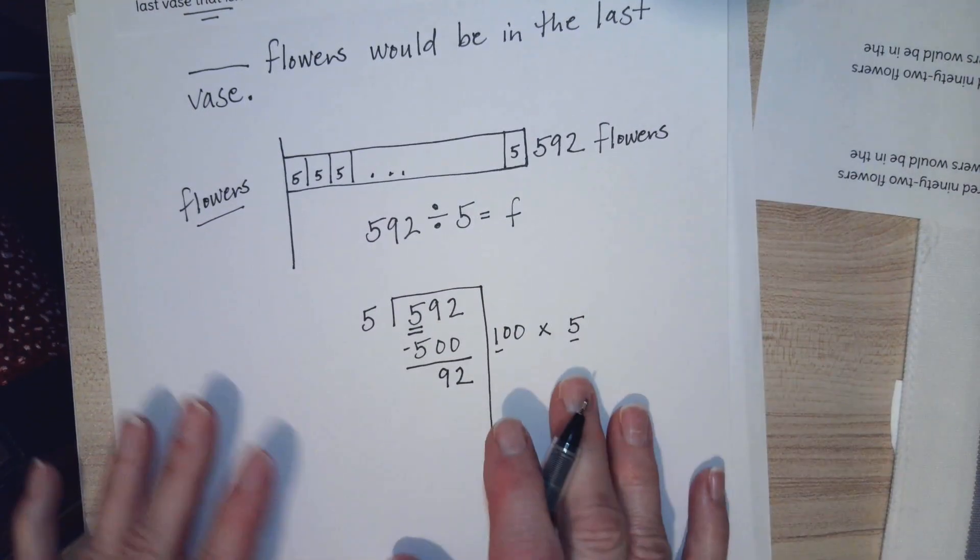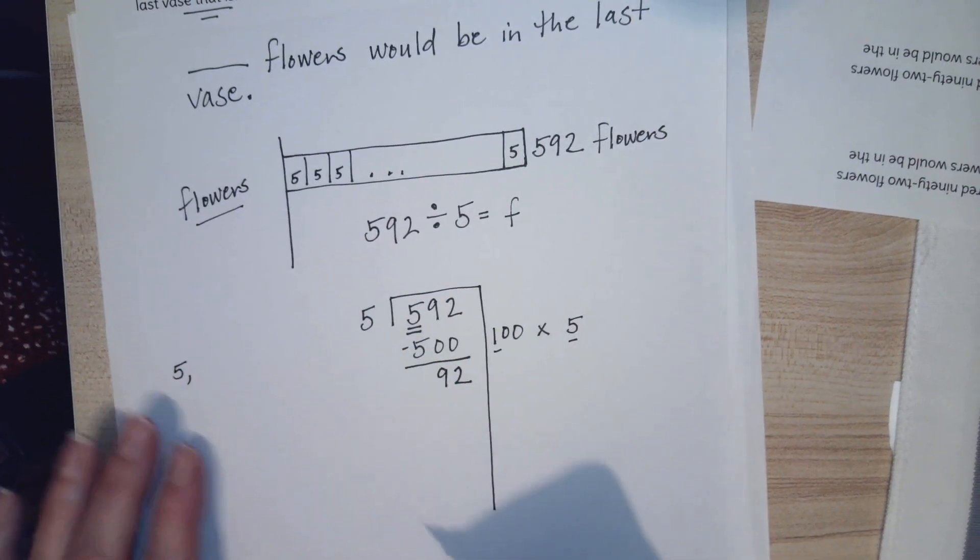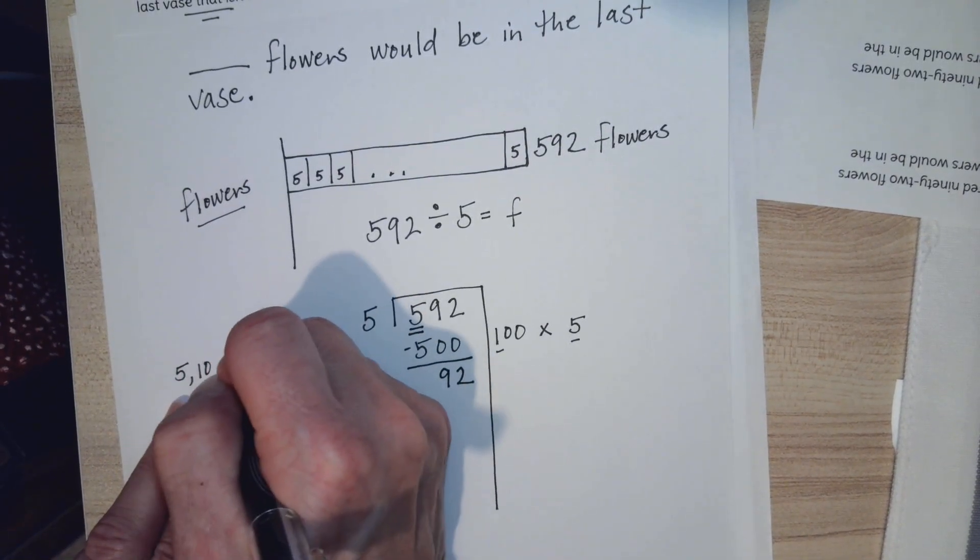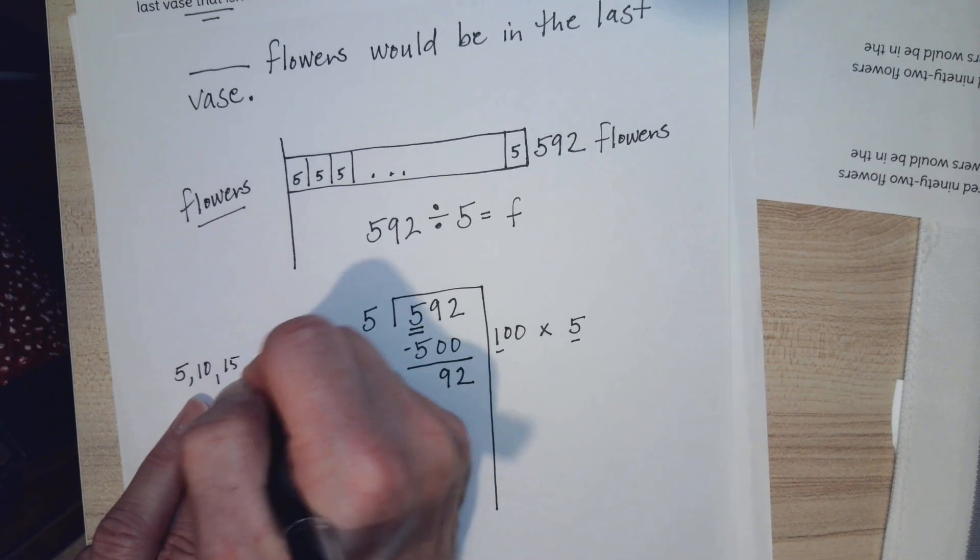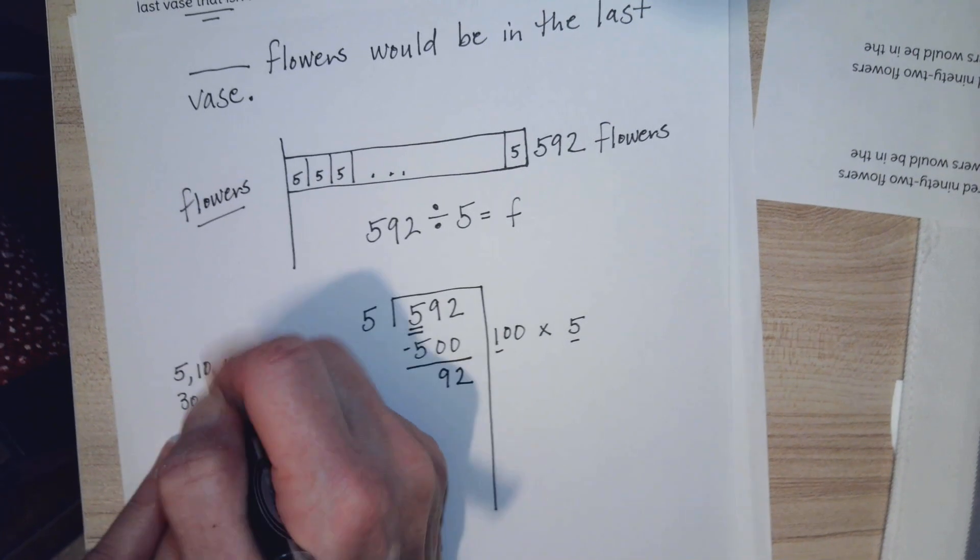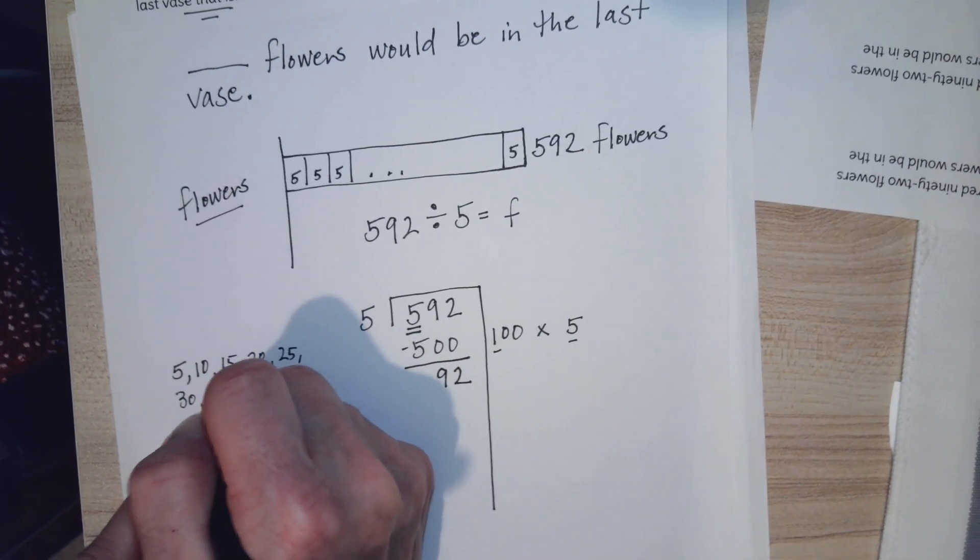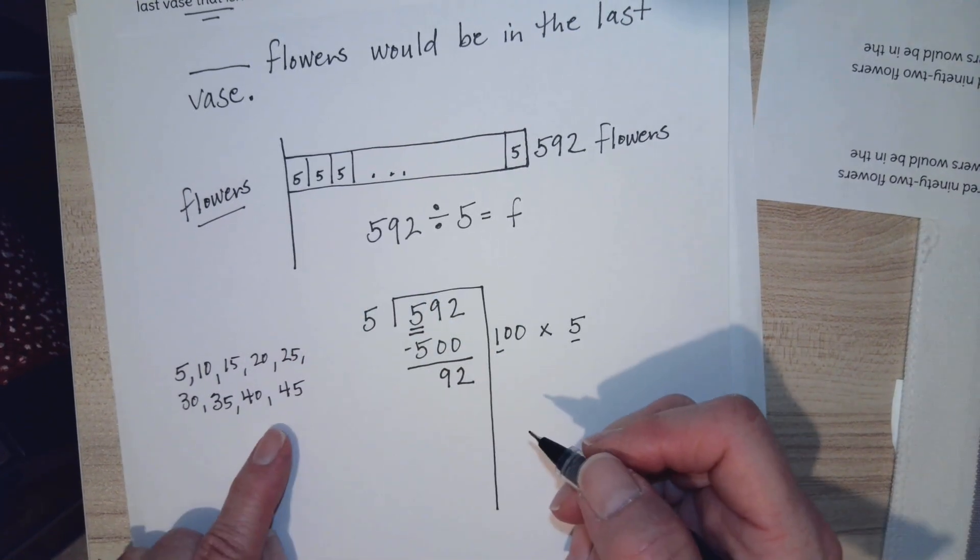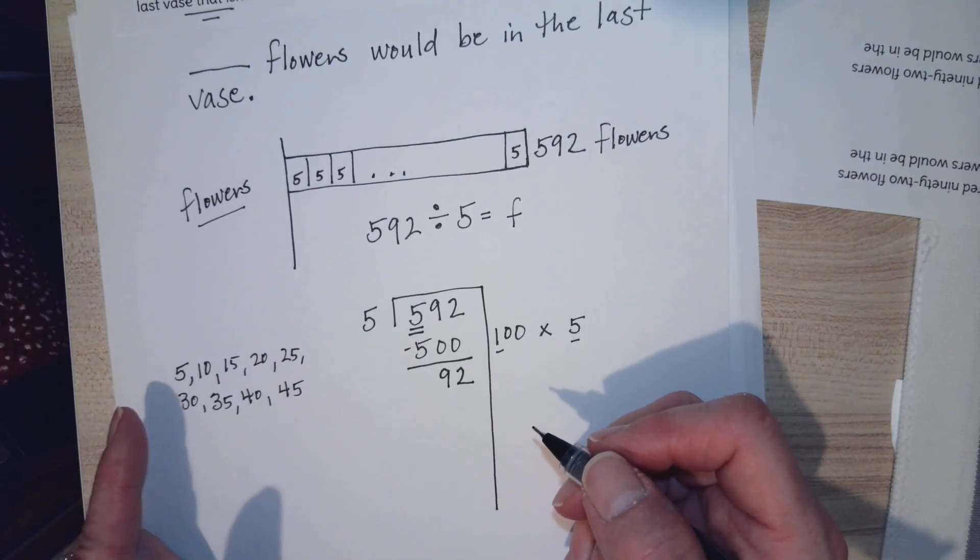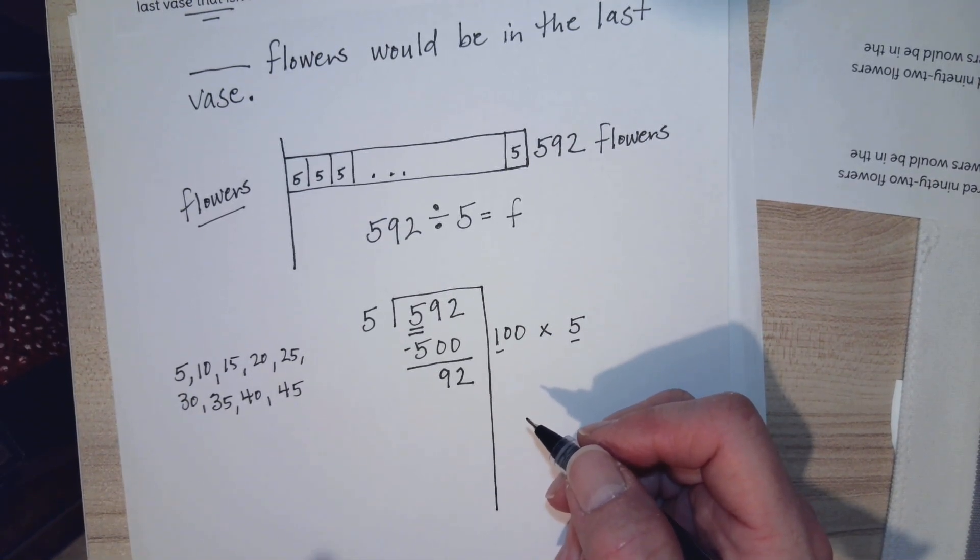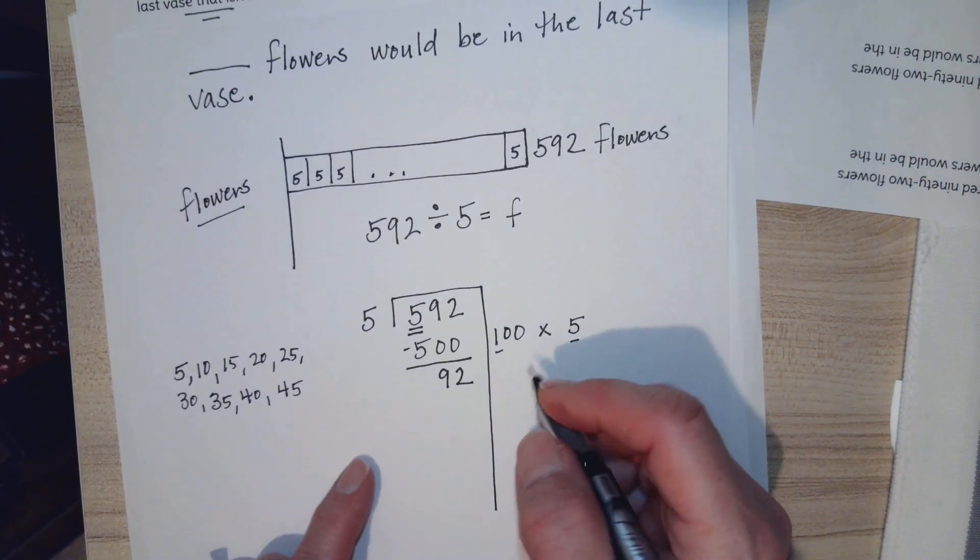I'm going to list some multiples. I know 5 times 1 is 5. I'm going to skip count: 10, 15, 20, 25, 30, 35, 40, 45. Now if you don't want to keep doing that, you could think of the biggest one that you know without having to list them all.